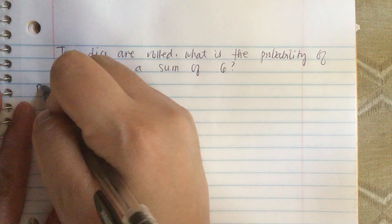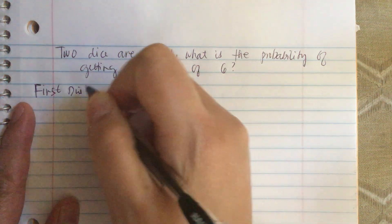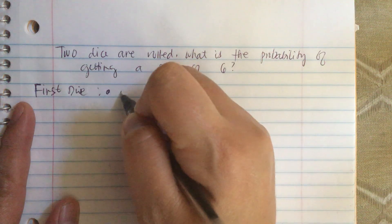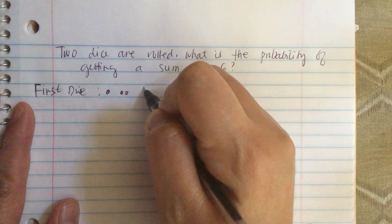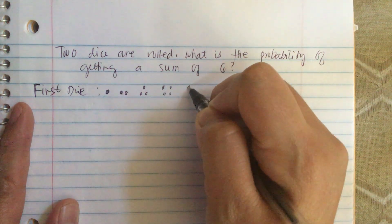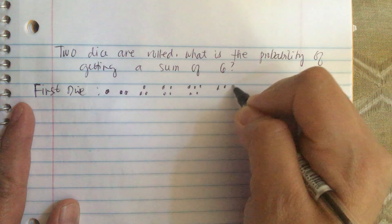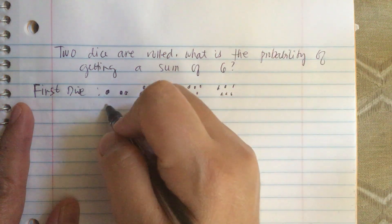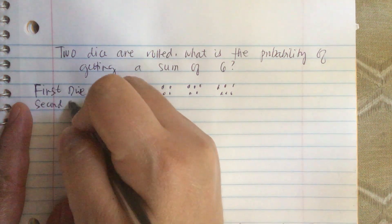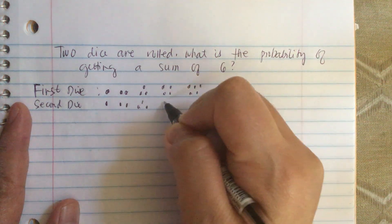The first die has one dot, two dots, three dots, four dots, five dots, and six dots. And the second die is set up the same way.